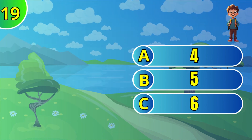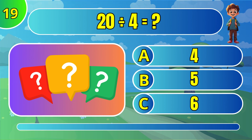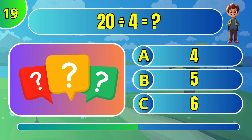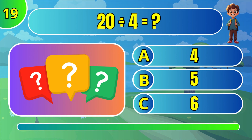What is 20 divided by 4? The answer is C: 5.